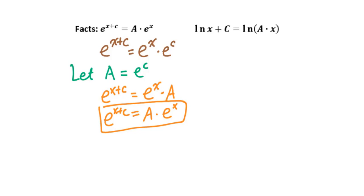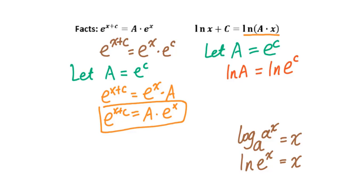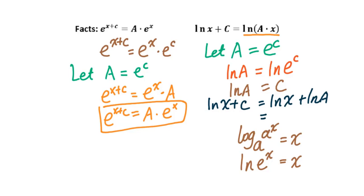For natural log x plus c, we still make a equal e to the c. Then we take the natural log of both sides. We get natural log of a equals natural log of e to the c power. Using the formula log base a of a^x equals x, we get natural log of e to the c equals c. Therefore, natural log x plus c equals natural log x plus natural log a, which equals natural log of (ax).